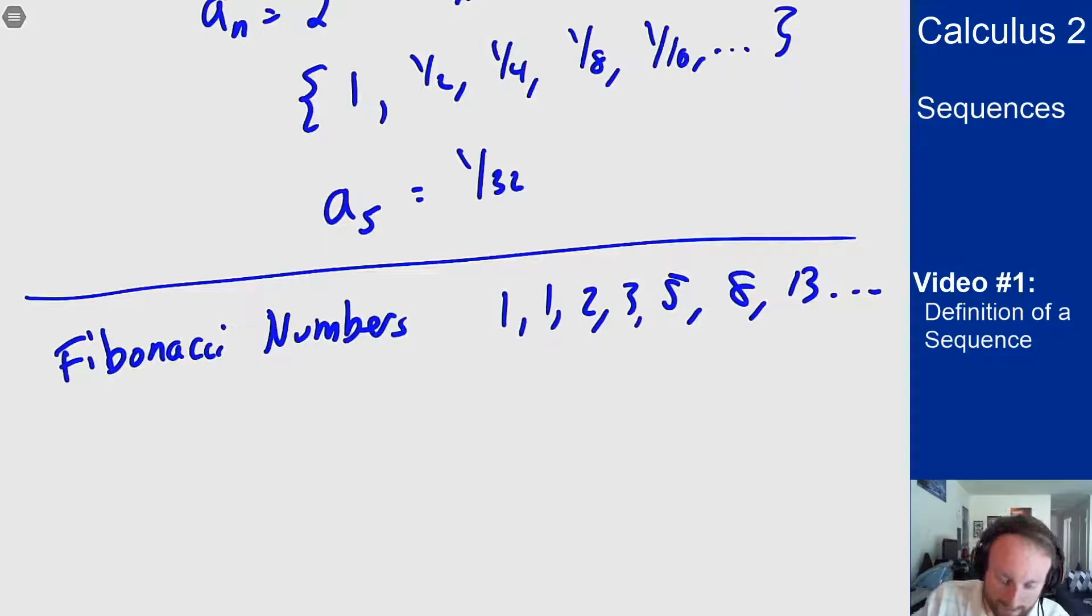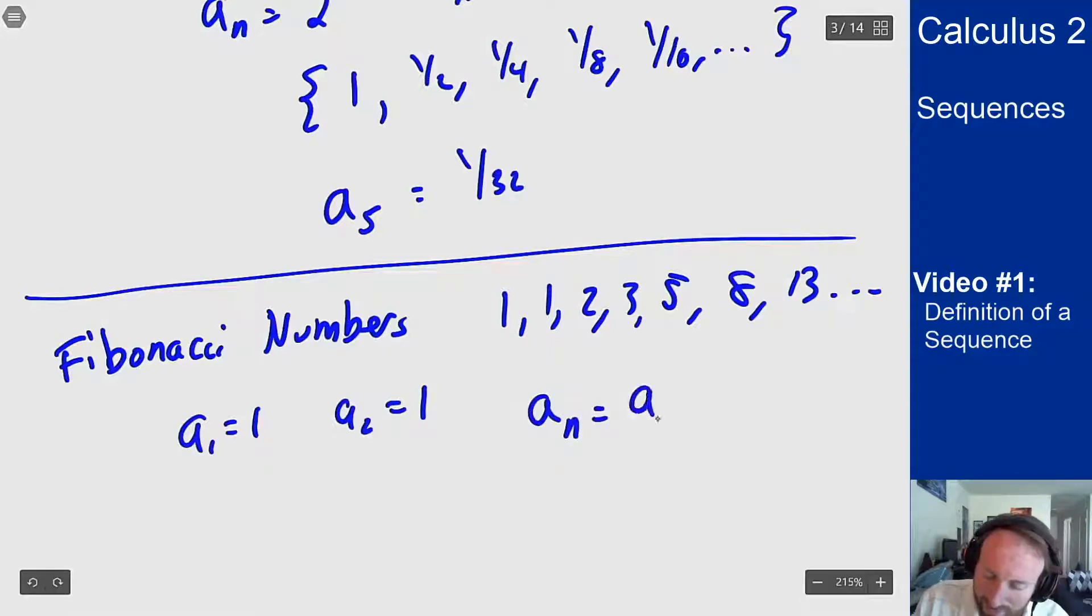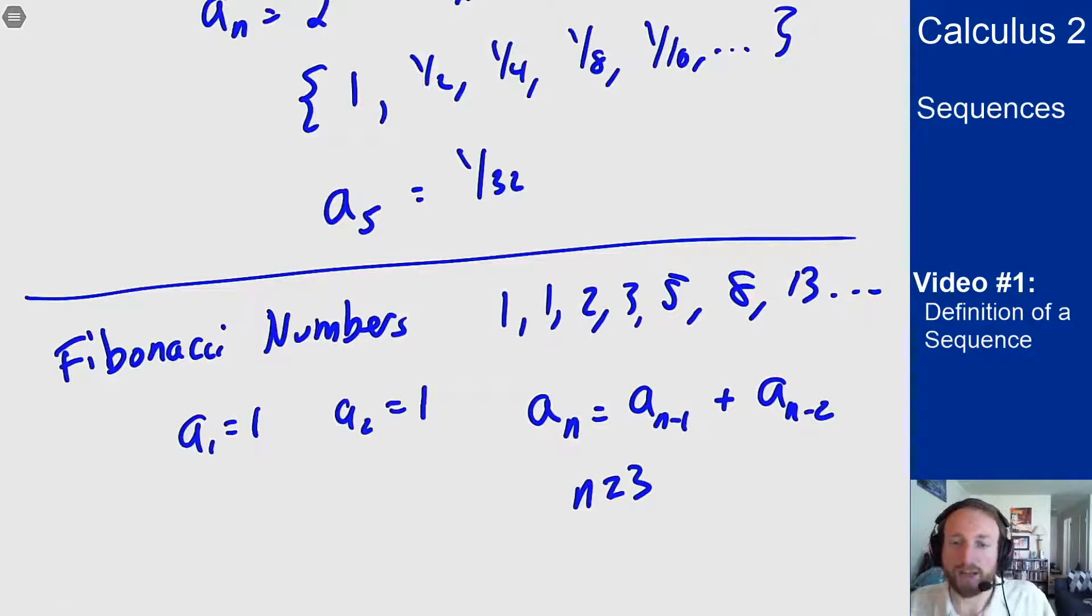You could write this as a1 is 1, a2 is 1, and an is an minus 1 plus an minus 2 for n greater than or equal to 3. So for any n bigger than 3, how do I find an? I add up the two terms before it. That's what this tells me.